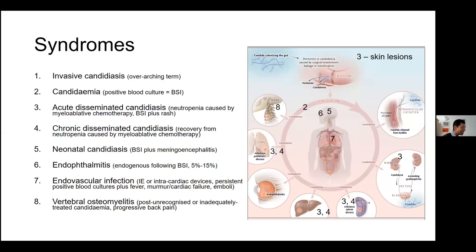Acute disseminated candidiasis usually occurs in people with neutropenia caused by myeloablative chemotherapy. These people usually have a bloodstream infection with Candida plus a characteristic hemorrhagic and papular rash consistent with small vessel vasculitis, and they may also have multiple organ involvement.